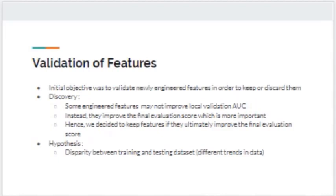Our objective was to validate newly engineered features in order to keep or discard them. If the model produces a higher AUC value with a newly added feature, we keep it; otherwise, we discard it. However, through experimentation, we discovered that some engineered features, although they did not increase the local validation AUC, actually improved the final evaluation score, which is more important. Our group decided to change our approach to keep features that ultimately improve the final evaluation score. We suspect the discrepancy between validation and final evaluation scores is due to disparity between the training and testing datasets, possibly caused by different trends in the data.